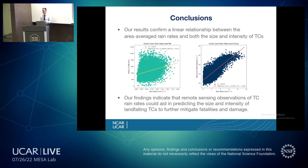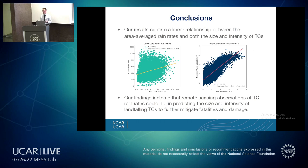A hundred percent — there are definitely variables we are missing that contribute to rainfall amounts. When storms go over land, you have orographic lifting, for example. That is why this is an idealized framework, so we can understand these mechanisms on a more simplified scale. That's also why I would like to see if these relationships hold in satellite observations. As a model, there are things we're missing because we just don't know exactly how all of these processes work together.